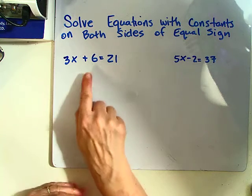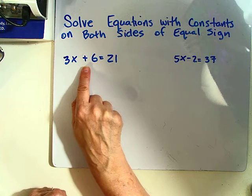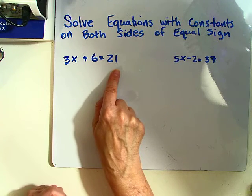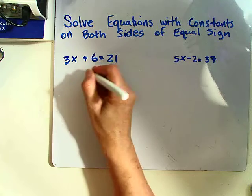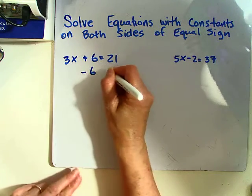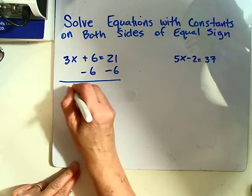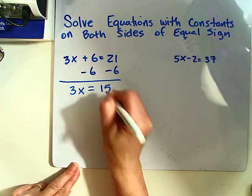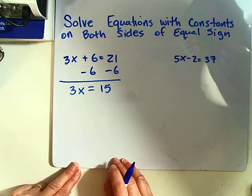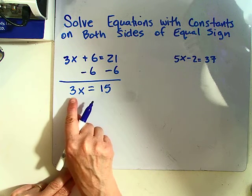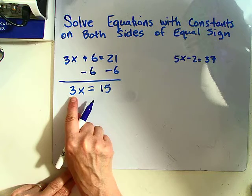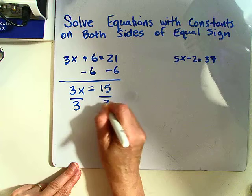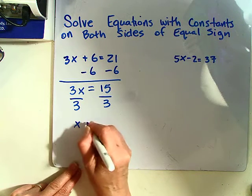In this case, we're going to use the subtraction property of equality to move this 6 to the other side of the equal sign. We then get 3x equals 15. Now we divide by 3 on both sides to get x equals 5.